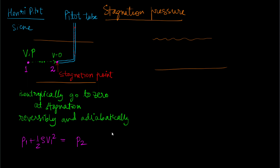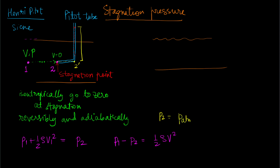From this we can write p2 minus p1 equals half rho v squared. We need a way to find the static pressure at point one. The pressure at point two (and at the corresponding point two-prime) is the atmospheric pressure plus rho g times height h2 — the column of liquid in the Pitot tube above that level.